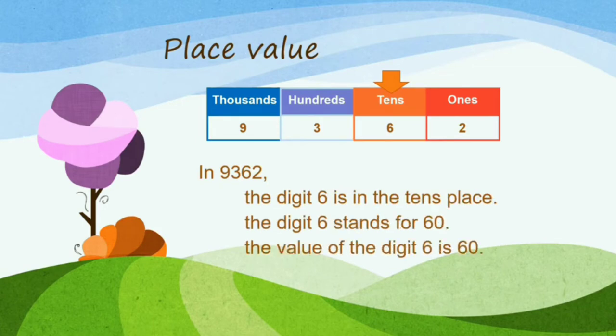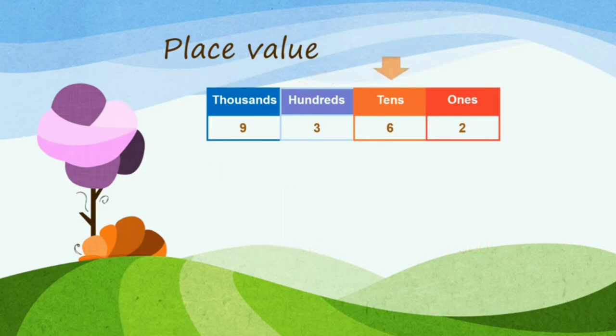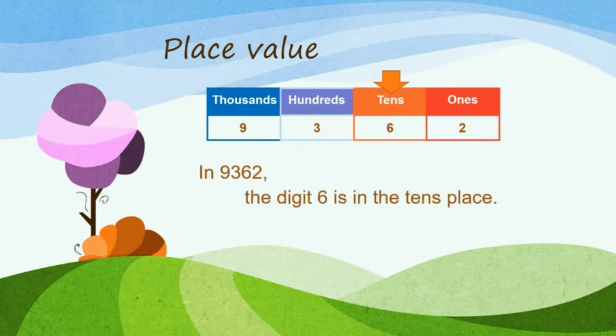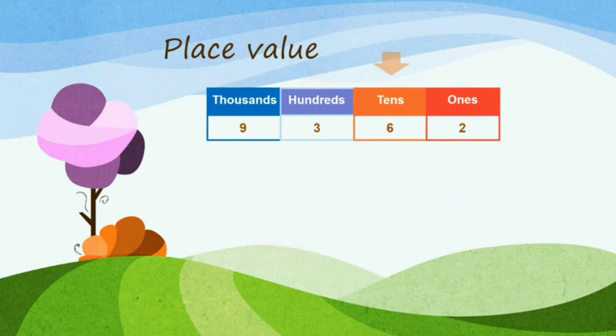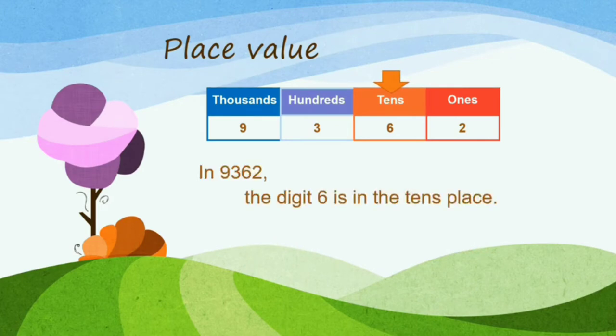Teman-teman, kita punya angka 6 di digit ketiga. It is for 10th. The digit 6 is in the 10th place. The digit 6 stands for 60. The value of the digit 6 is 60. Jadi, teman-teman, we call it in bahasa sebagai puluhan di angka ke-6 ya, di digit ketiga.